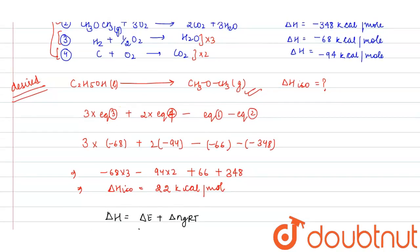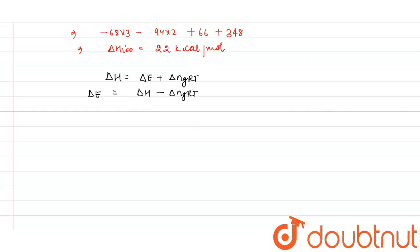Now see what is delta NG. This is your reaction. Delta NG is equals to gaseous moles of product minus gaseous moles of reactant. Here reactant is your liquid. So here it will be equals to 1.